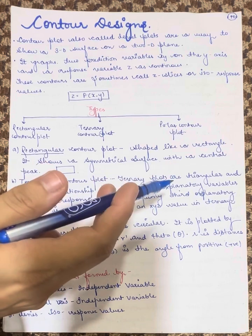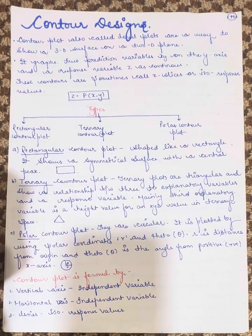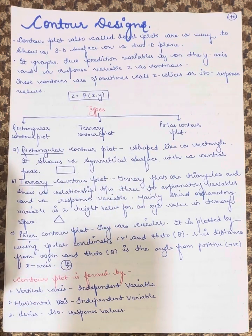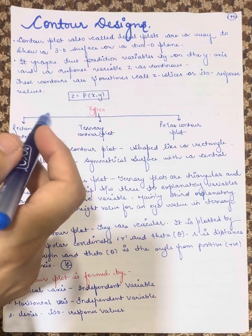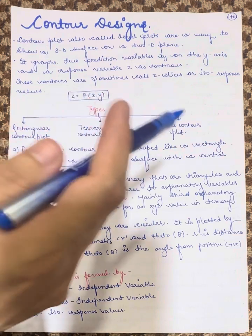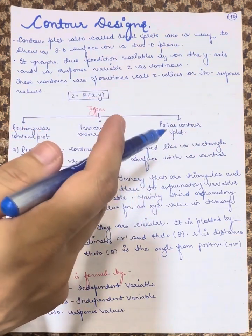It can be classified into 3 types. First is the rectangular contour plot. Next is the ternary contour plot. And third is the polar contour plot.